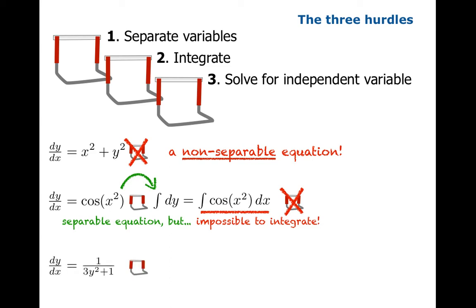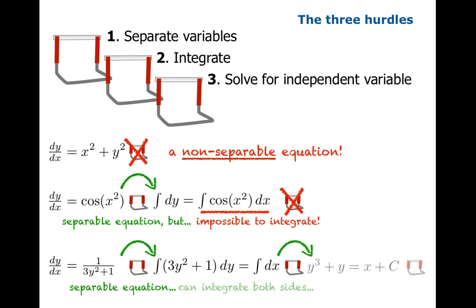And in this third example we have a separable equation. You can do the algebra to get your two differentials. You can integrate both sides successfully. But now what you get is an equation that you have to solve for y and you can't do it. You can't actually solve for y. So you get stuck at the very end tripping up on the third hurdle.